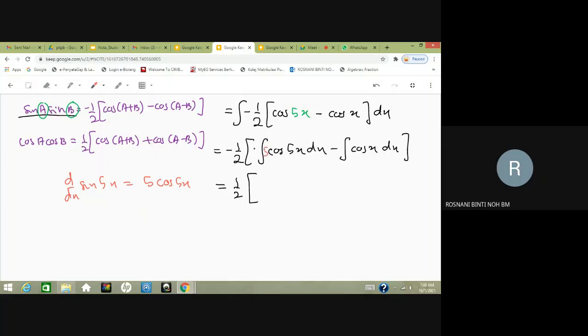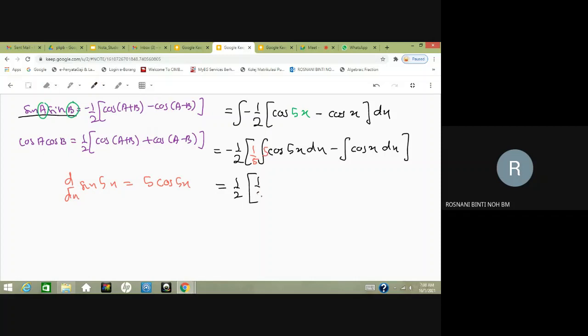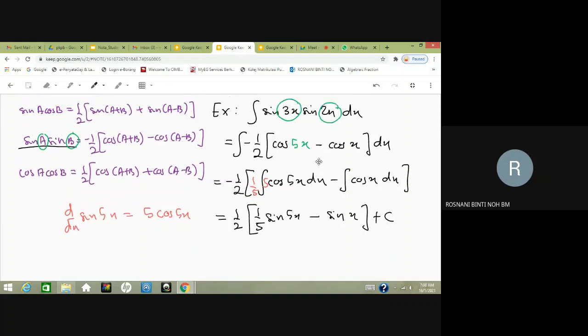...and one-fifth here. So we get one-fifth sin 5x minus... To integrate cos x, we know that the derivative of sin x is cos x, so the integral of cos x is sin x plus C.